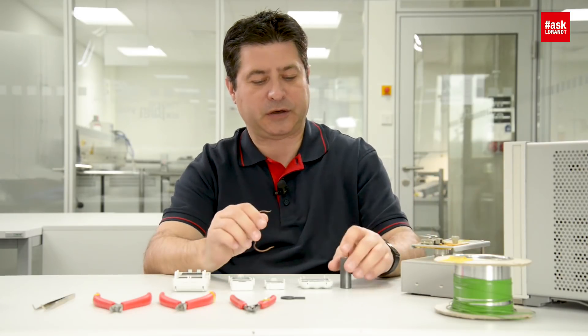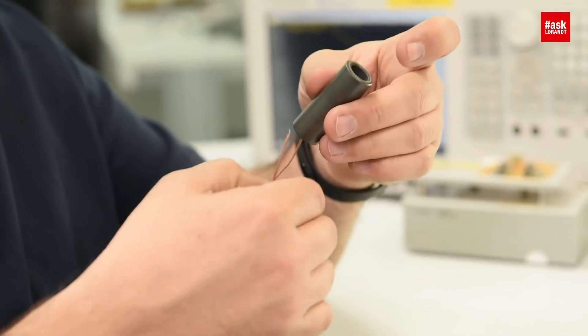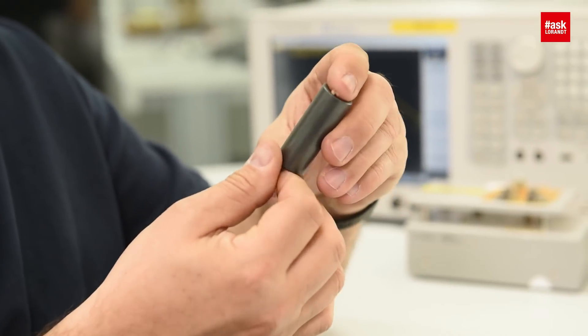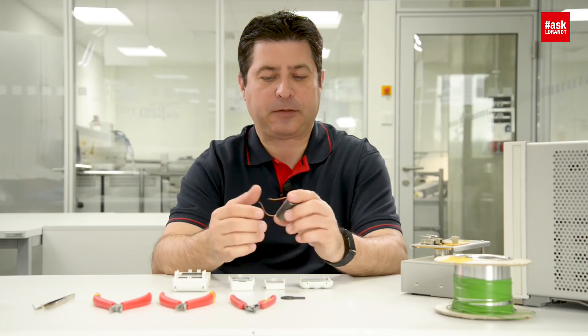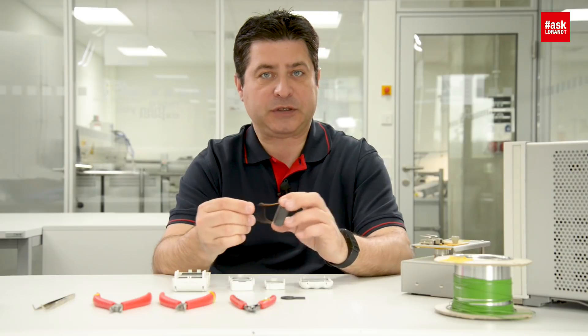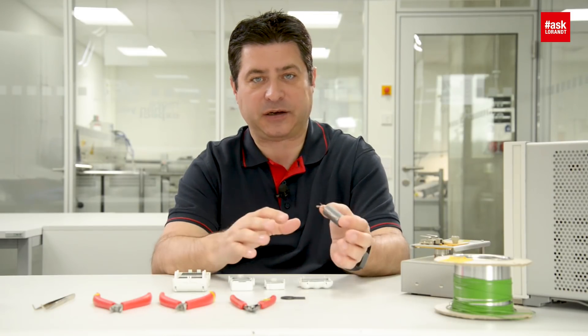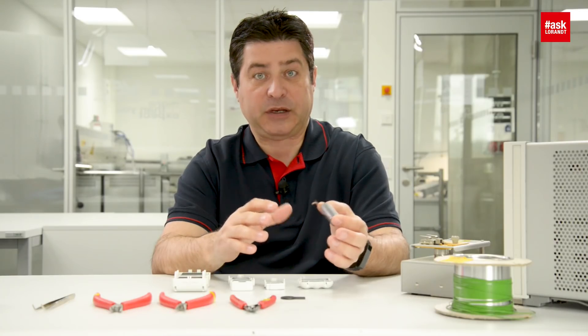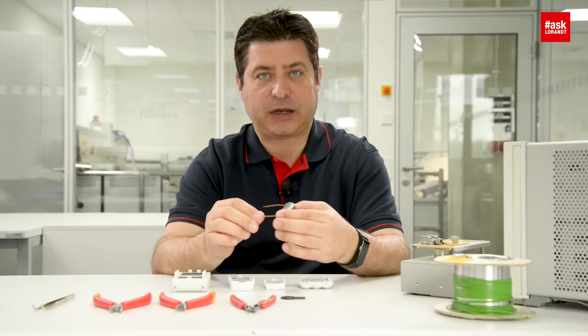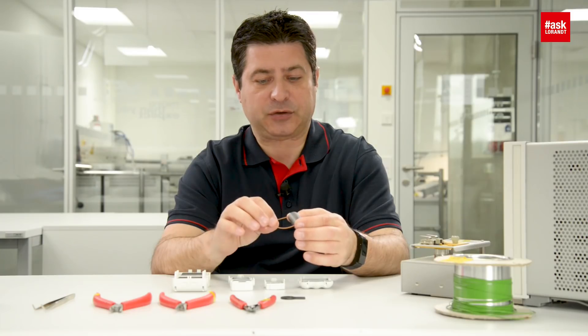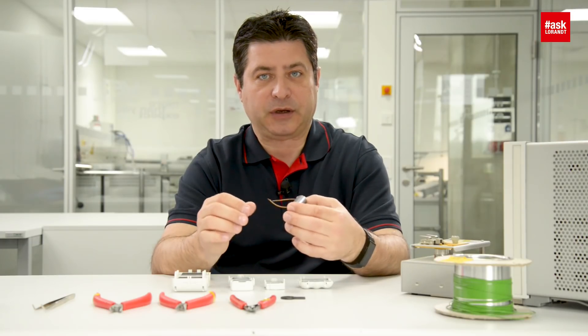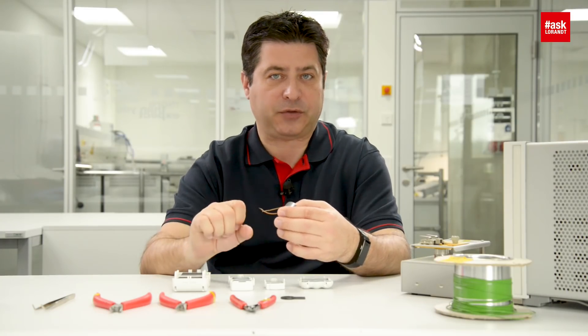So first of all I will take wire for a solid core. The thing is that when you have an EMC problem and you cannot change so fast the design, the easiest way is to try to catch this different emission or to increase the immunity by adding some ferrites on the cable.